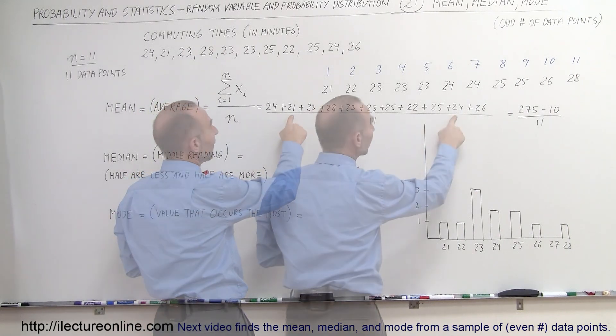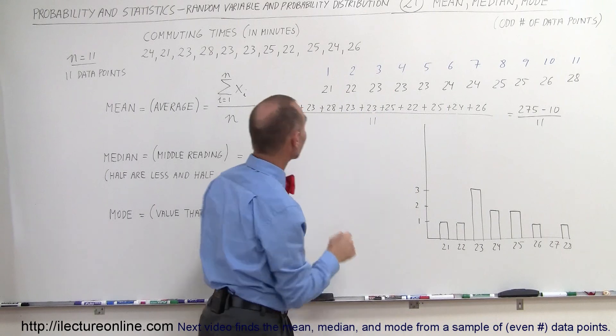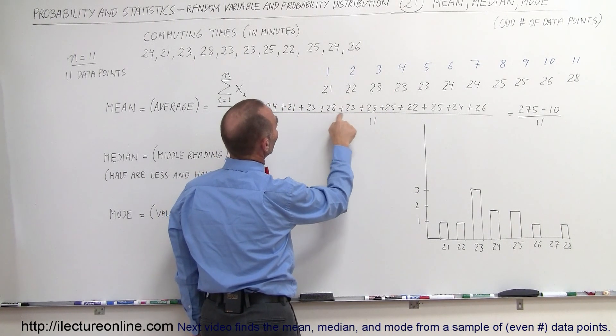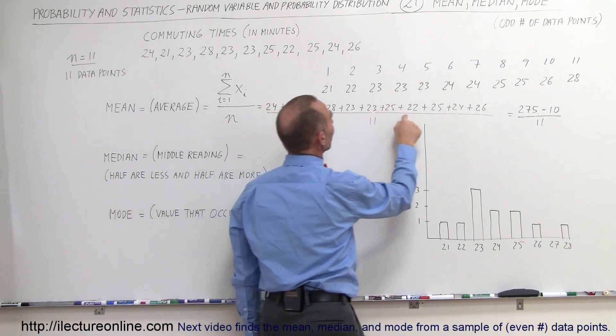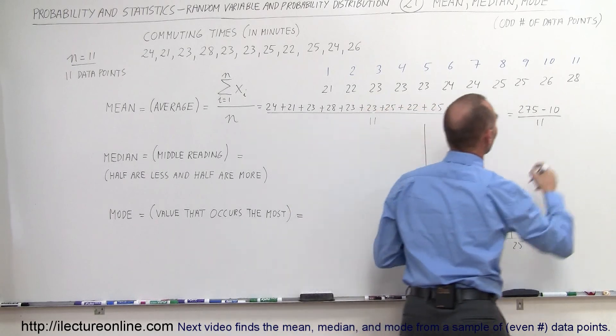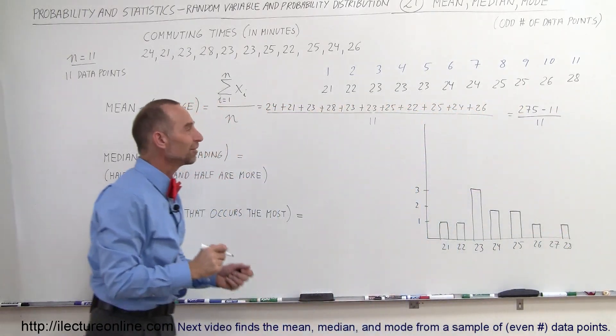So minus 1, minus 12, and oh, I think I might have made a mistake. Let me try that again. Minus 1, minus 5, minus 7, minus 4, minus 6, minus 8, minus 11, minus 12, plus 1. That's minus 11, aha. Good thing that I checked. So it's 275 minus 11 divided by 11.